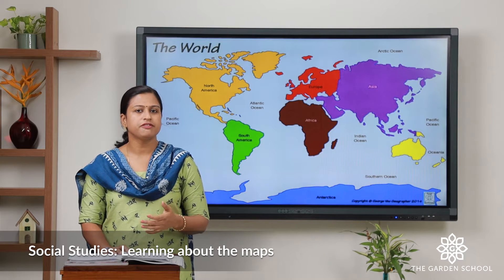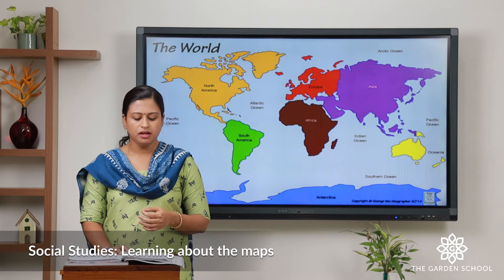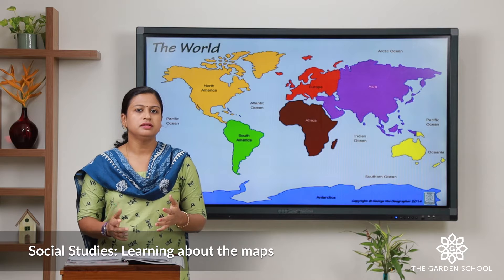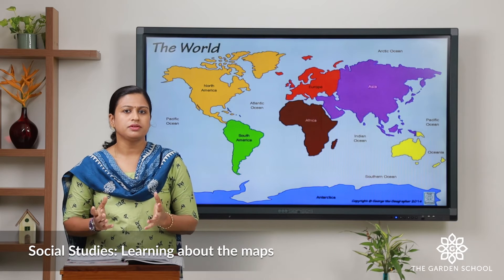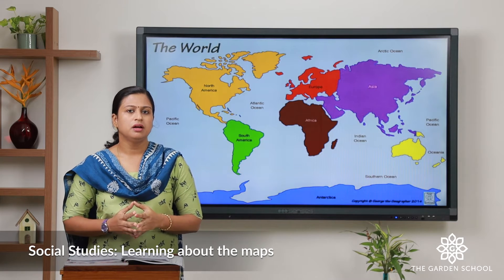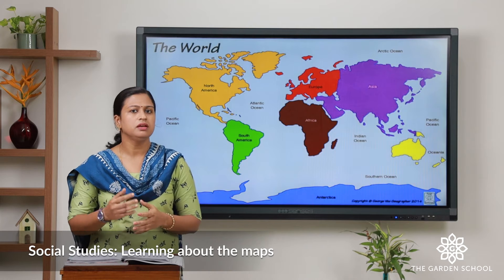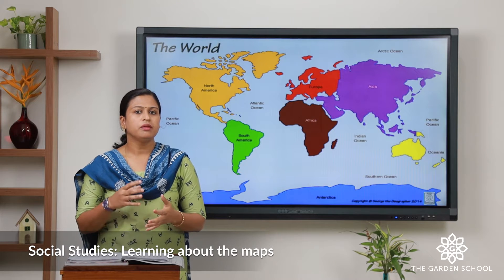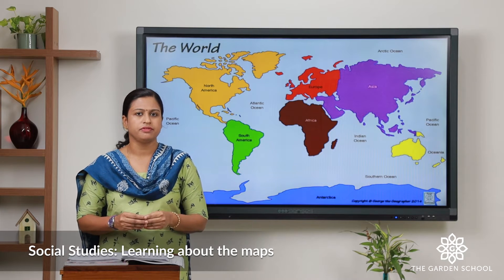On page number two we can see a diagram. It tells us the uses of map, features of map, and the difference between the map and globe, which we will learn further in detail. Do you know who is a cartographer? A person who makes maps is called a cartographer, and the work of making maps is called cartography.